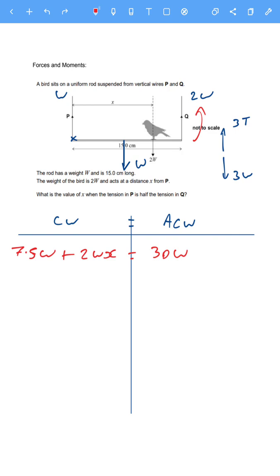Then we just need to do some relatively straightforward maths. Take the 7.5W to the right hand side. So 2WX equals 30 minus 7.5, which equals 22.5. To get X on its own, we can cancel these Ws. So X equals 22.5 divided by 2, which gives us X equal to 11.3 centimeters.